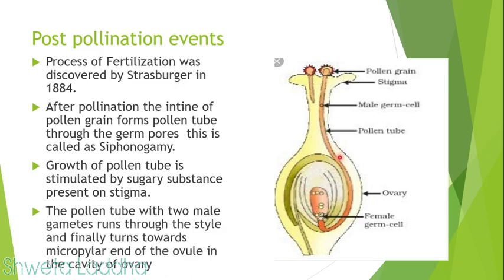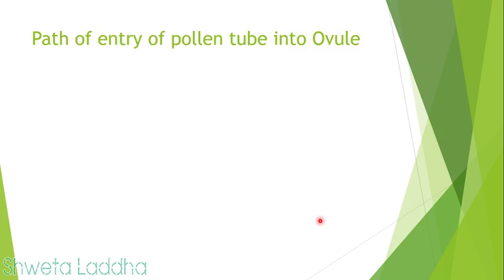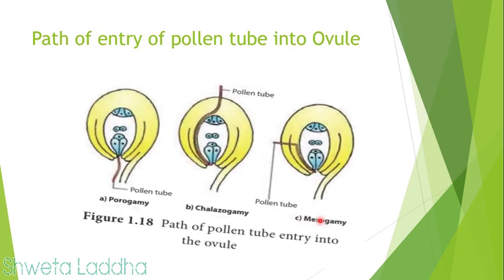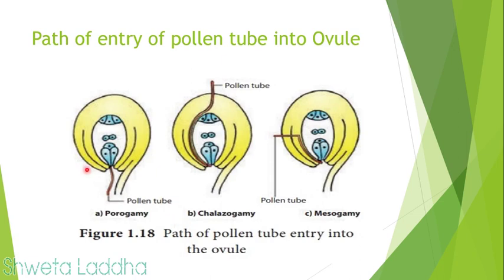The pollen tube, along with the two male gametes, runs through the style and finally reaches the embryo sac cavity. The path of entry of the pollen tube into the ovule occurs by three ways: if the pollen tube enters through the micropyle, we call it porogamy; through the chalazal end, it is chalazogamy; through the integuments, it is mesogamy. The most common one is porogamy, through the micropyle.